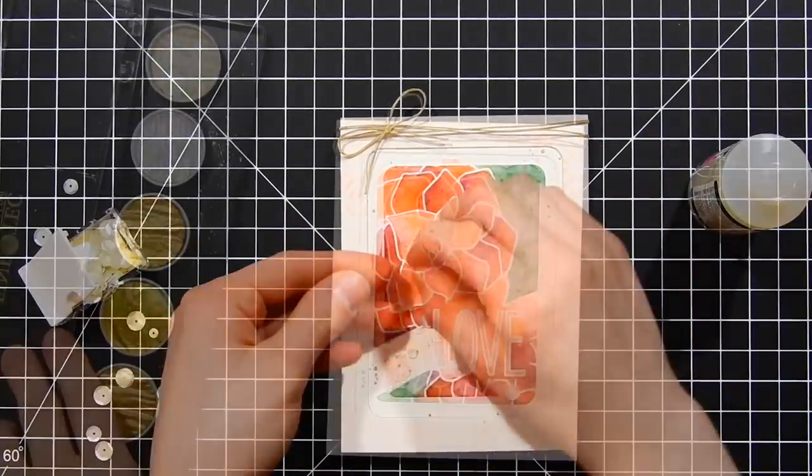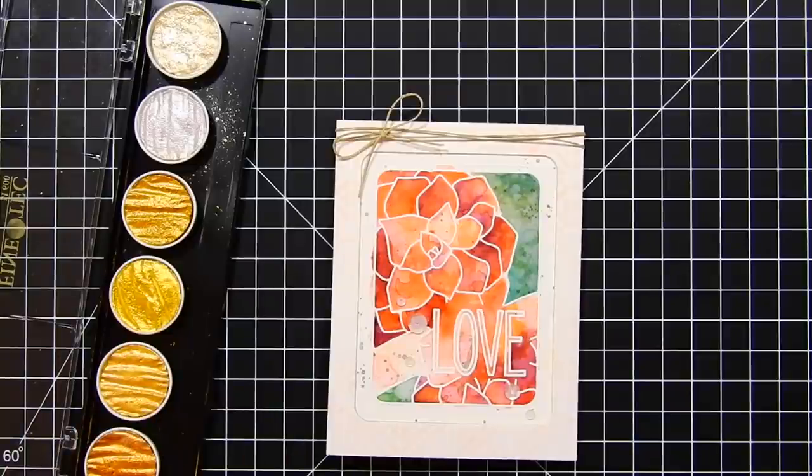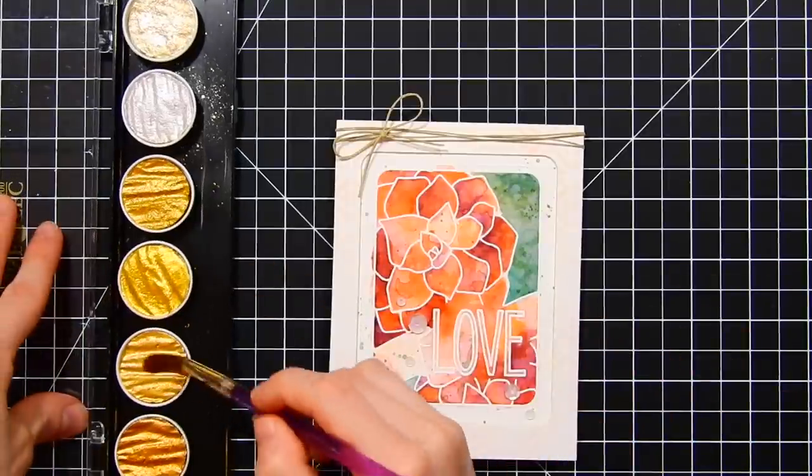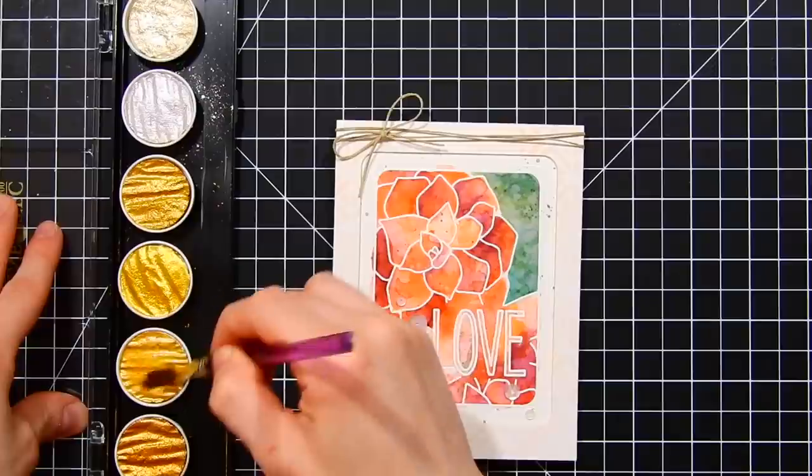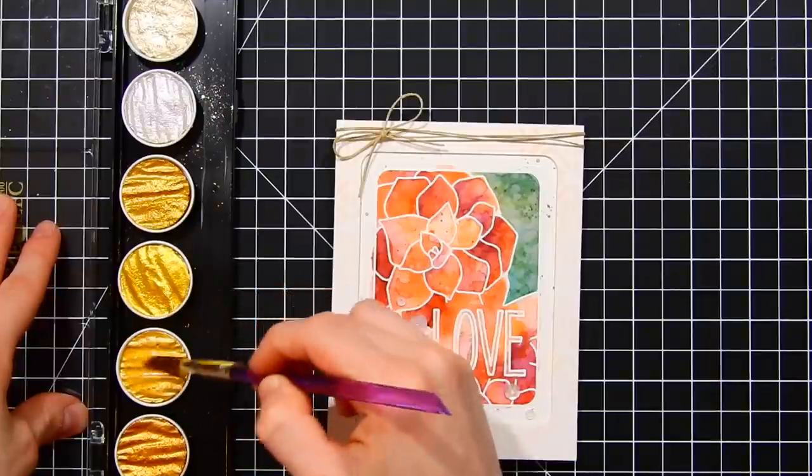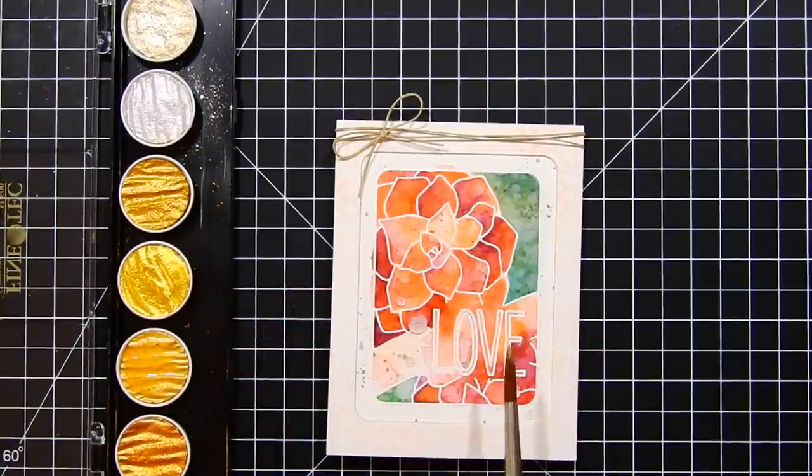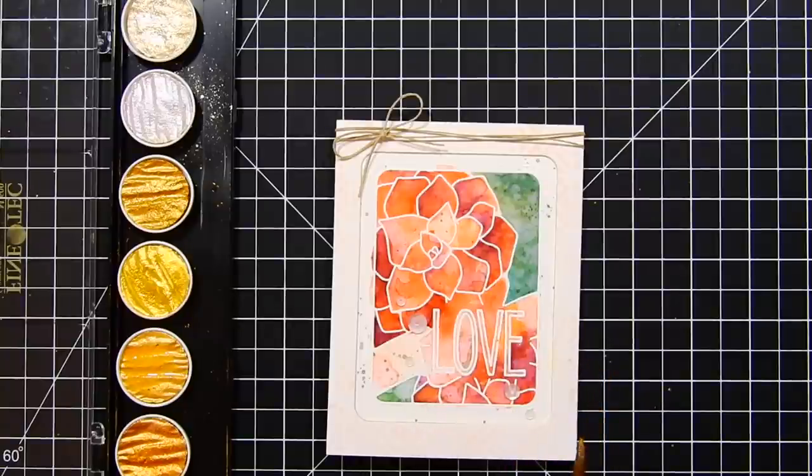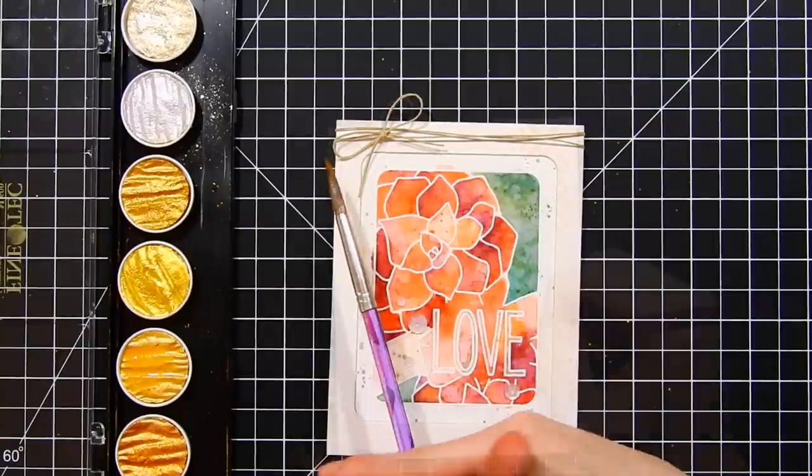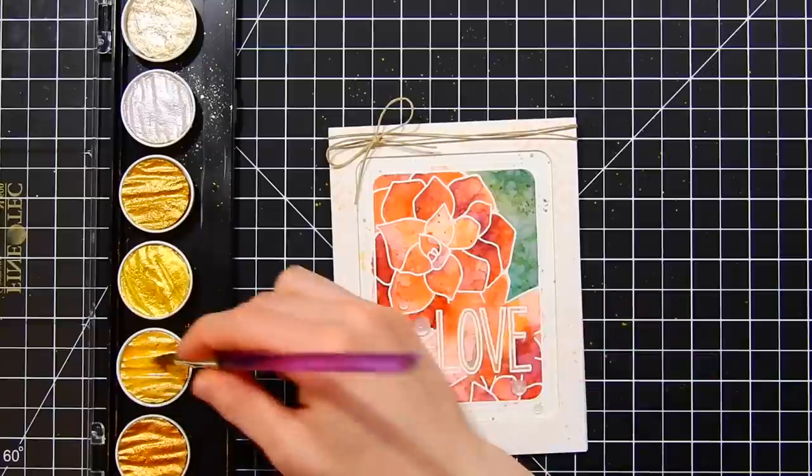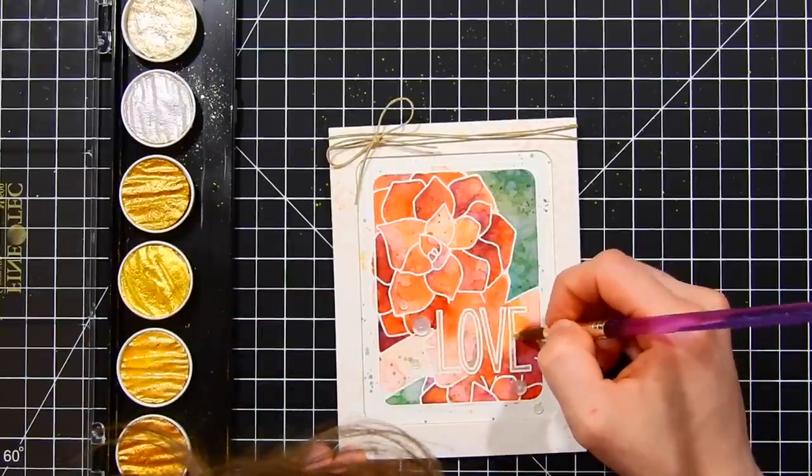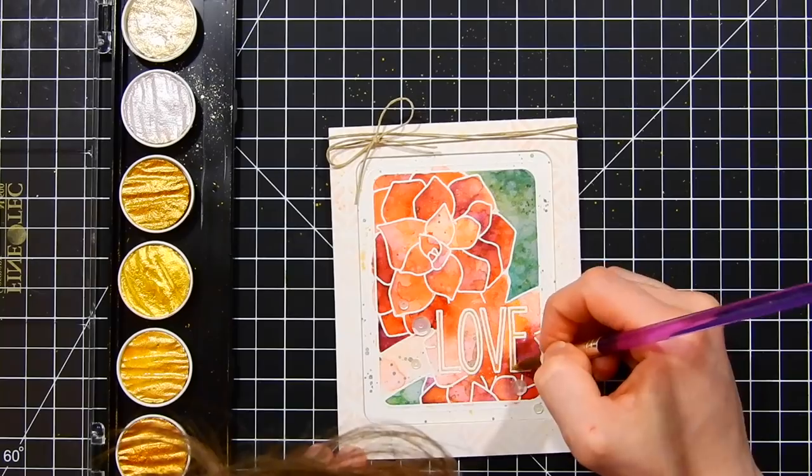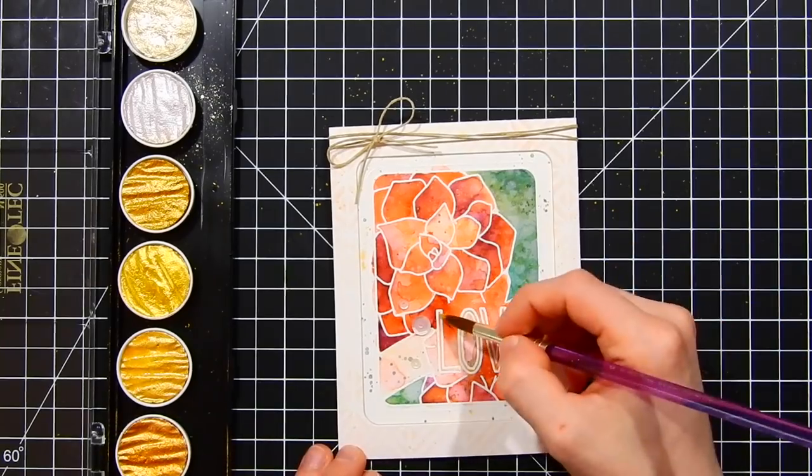And then my final finishing touch was that I felt it needed to have a little bit of gold. So I'm taking my FineTec gold watercolors and I'm going to first add some splatters. I really love adding the look of splatters to cards. I think it really adds a nice finishing touch and really gives them a more artistic feel. So I'll go ahead and add the splatters. And then I'm also going to paint inside the word love to help it stand out just a little bit more and also give it that nice soft gold shimmer.